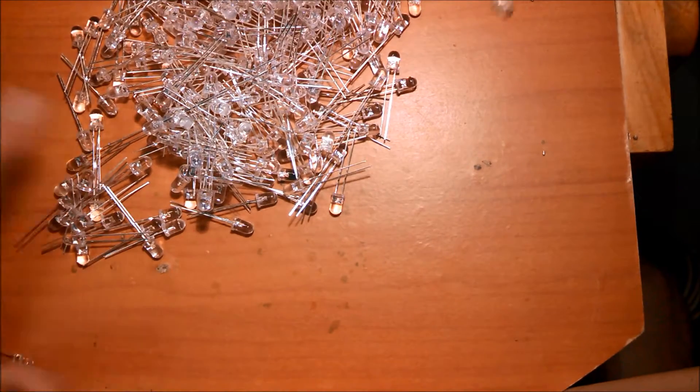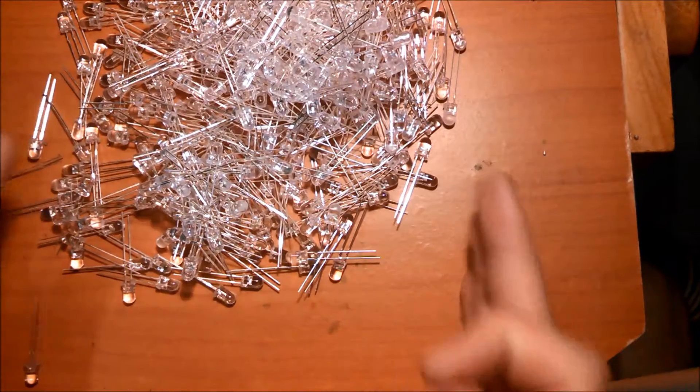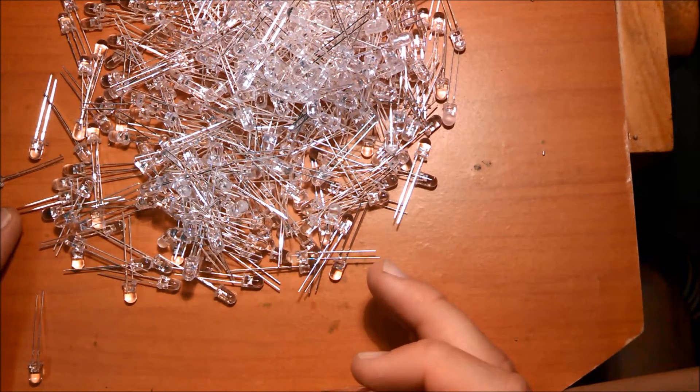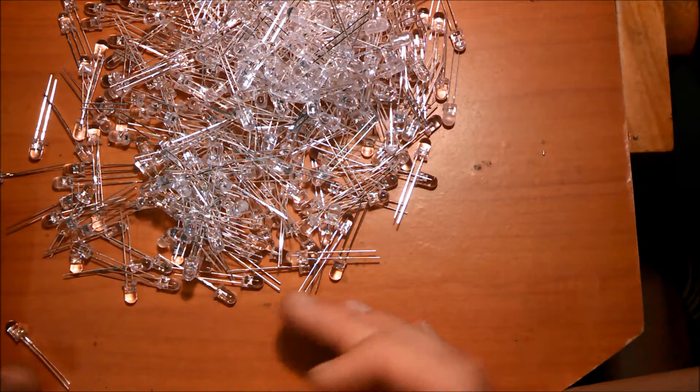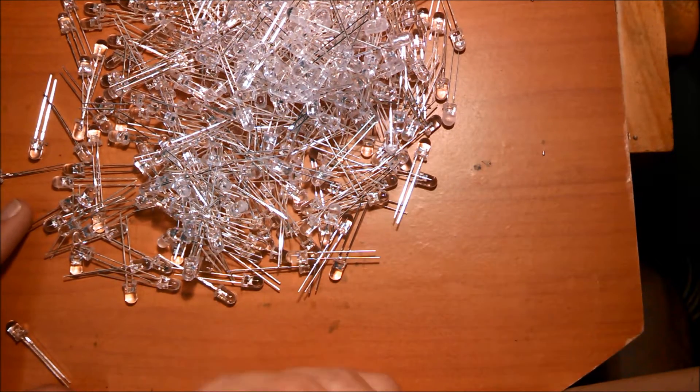The first thing you need to do in order to start assembling the Thomas Helmet is to get yourself a lot of LEDs. I have 500 here but you'll need around 300 or maybe 400 depending on how many LEDs you want on your display.